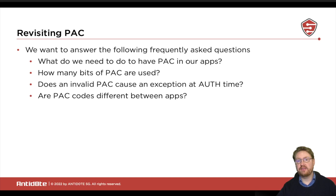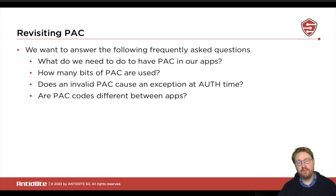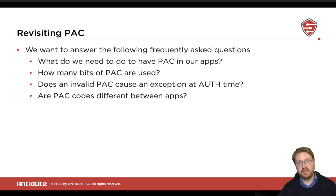The questions we want to look at today are: what do we need to do to have PAC in our own apps, because by default, stuff that you compile on macOS will not have PAC. We also want to know how many bits are actually used in the pointers in macOS for PAC. Then there's the question of whether a modified PAC-protected pointer will trigger an exception on auth, or just return an invalid result. And finally, we will do a short test if PAC is actually different between different apps.